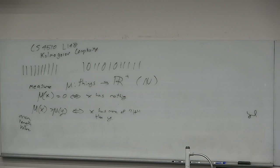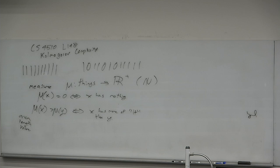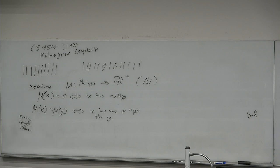Other examples of measures: absolute value of a number, the identity function on the naturals, probability of an event occurring, entropy, cardinality of sets. We want to create a measure on finite strings to tell us how algorithmically random a string is — how hard is it to describe?